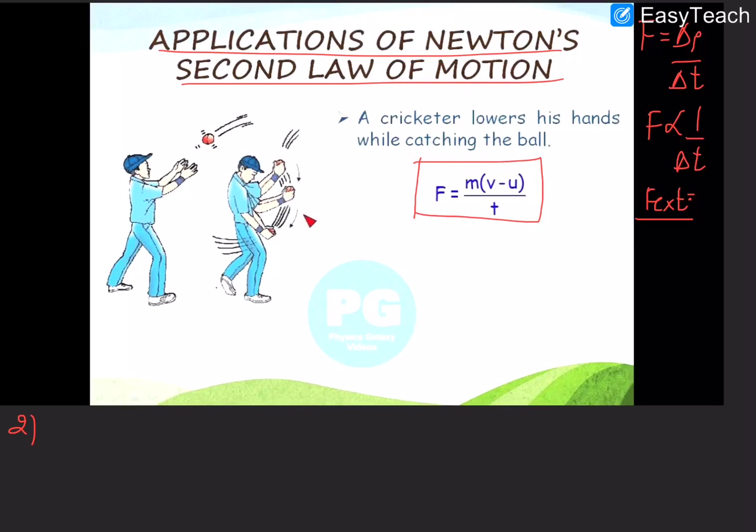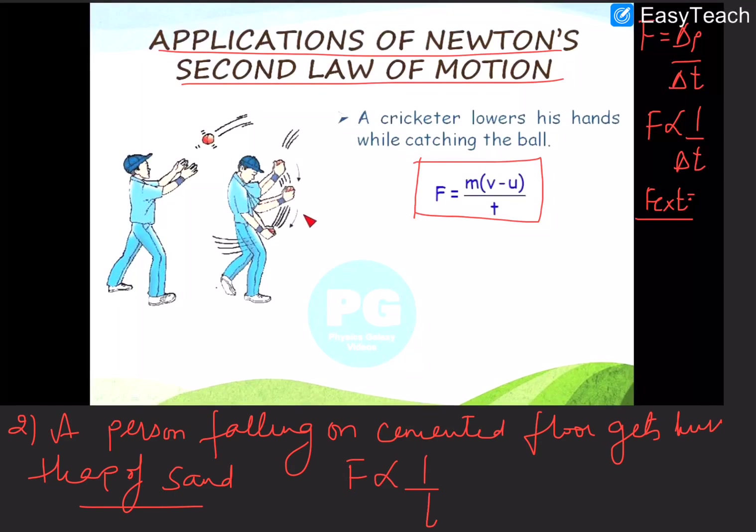Similarly, the second application is a person falling on a cemented floor. A person falling on a cemented floor gets hurt, whereas a person falling on a heap of sand is not injured. Now what happens when this happens? Again, force becomes inverse to the time for the same change in momentum. So when a person falls on cemented floor, the rate of change of momentum will be very large because it will be abruptly stopped, stopped in a very small interval of time. Whereas, when a person falls on a heap of sand, the time interval will increase and he will not get injured.